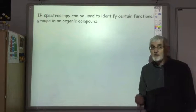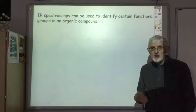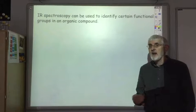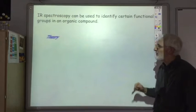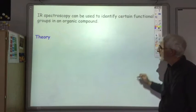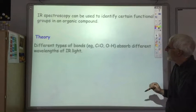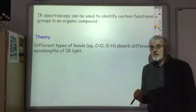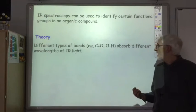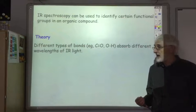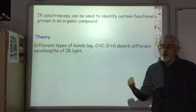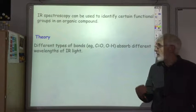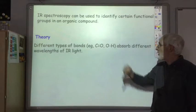Infrared Spectroscopy is really good at identifying certain functional groups. You need to have some idea of the theory behind IR spectroscopy, which allows it to do that. You don't need to know the theory in great detail, just a very brief outline. It relies on the fact that different bonds can absorb different wavelengths of infrared light. So a C-O bond, or C double bond O, would absorb infrared light of a different wavelength than an O-H bond.